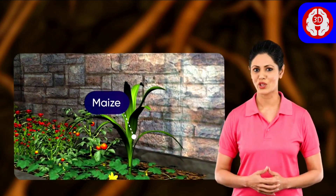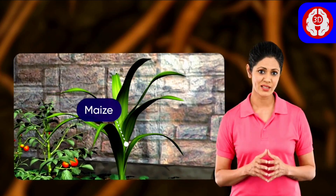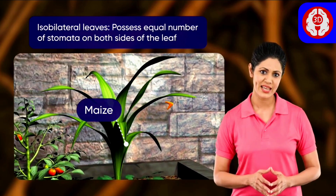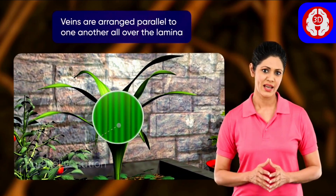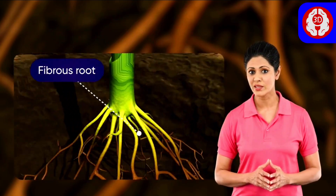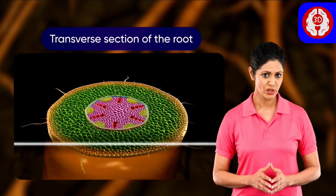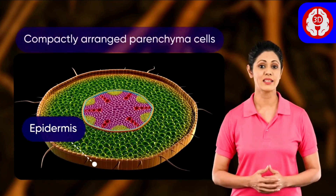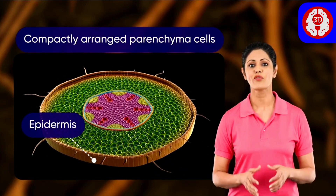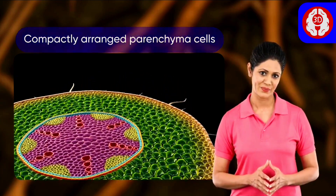Maize is a monocot plant showing characteristics like isobilateral leaves with parallel venation and roots that are fibrous. In a transverse section of the root, we can see an outer epidermis that consists of compactly arranged parenchyma cells.